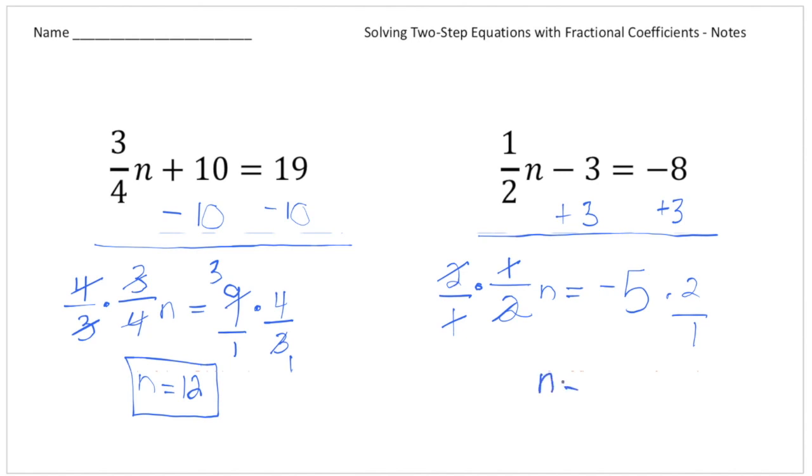And then negative 5 times 2 can really be written as negative 5 over 1. And negative 5 times 2 would give us negative 10. So that's our second solution. And there you go.